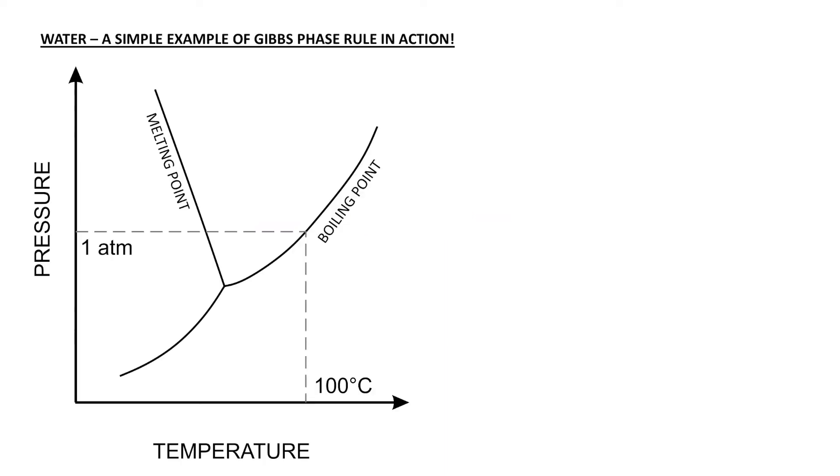Now we're going to look at a phase diagram of water and I'm going to give a really simple example of the Gibbs phase rule in action. Along the x-axis we have temperature and along the y-axis we have pressure. This dashed line represents one atmospheric pressure with a crossover point at 100 degrees Celsius.